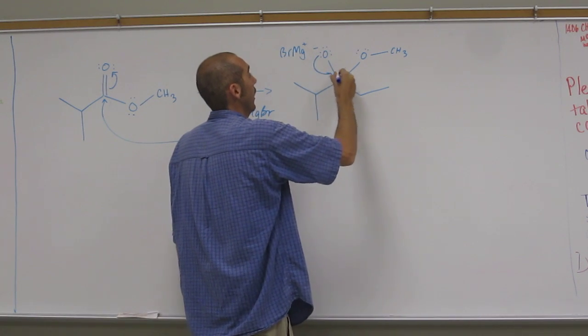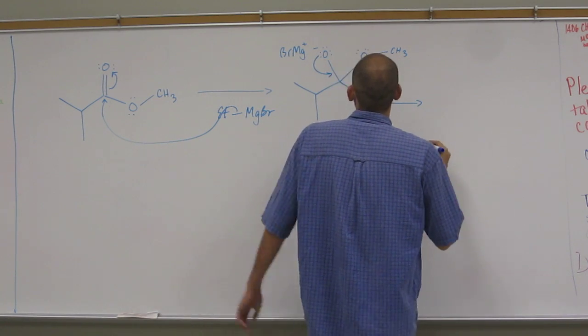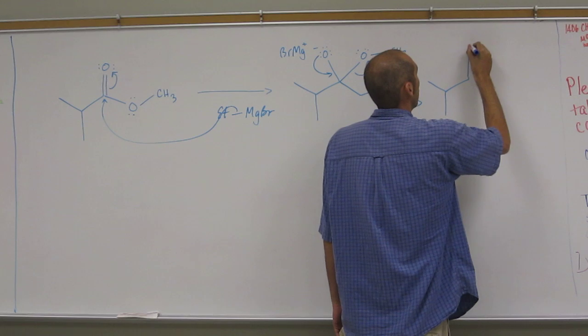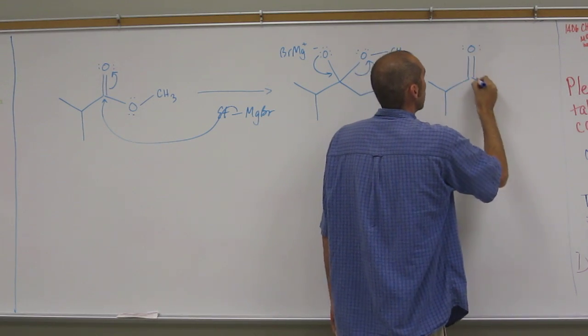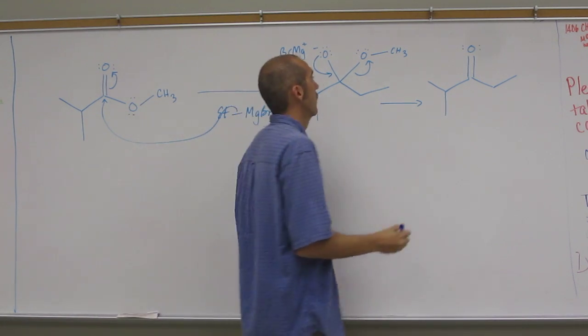So this is going to break back down and knock that out. So in fact, what you get as an intermediate from this is a ketone, just like in the acid chloride method. Like that. Okay? So that's your ketone.